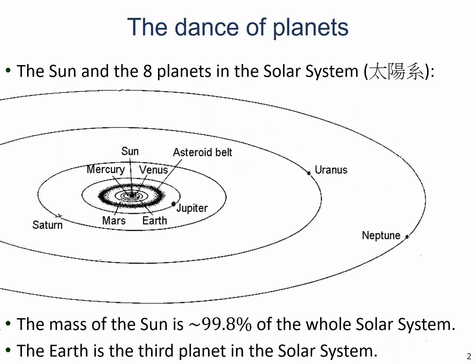Let's look at this picture of the solar system. We can see that the Sun is at the center with its mass of about 99.8% of that of the whole solar system. The other eight planets are in more or less circular orbits around the Sun. The Earth is the third planet in the solar system. However, if you look at those planets at this scale, you will find that they are very, very small.